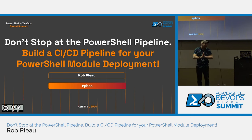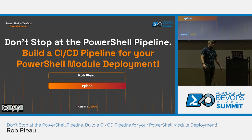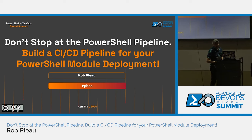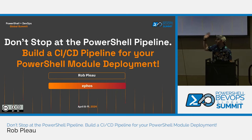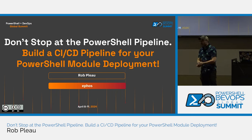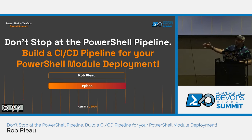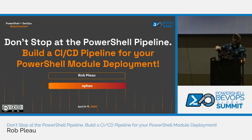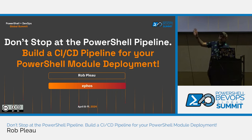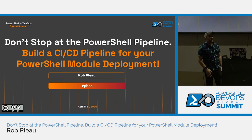Hello and welcome to Don't Stop at the PowerShell Pipeline — build a CI/CD pipeline for your PowerShell module deployment. Today we're going to be walking through taking a module, and we're largely going to be using GitHub and GitHub Actions workflows to take that module, get it to Git, get it up to GitHub, and then automagically deploy it to the gallery.